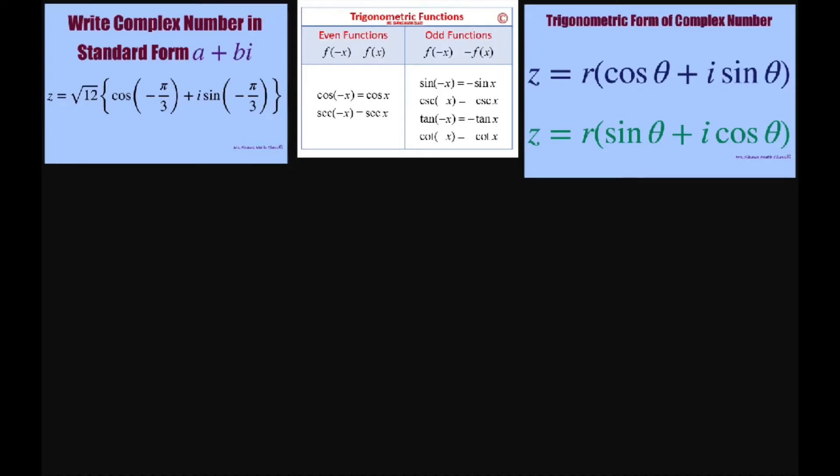So basically let's rewrite this using our even odd functions. We have z equals, also square root of 12 is 4 times 3, so that's going to be 2 square root of 3.